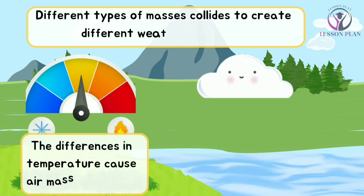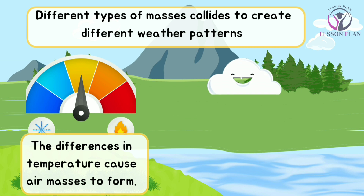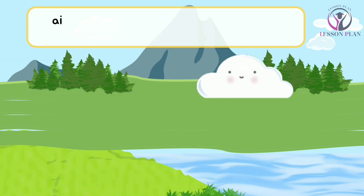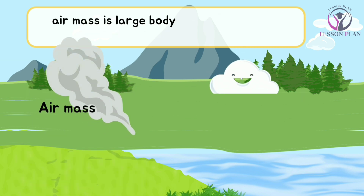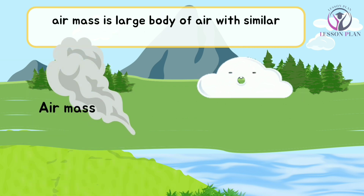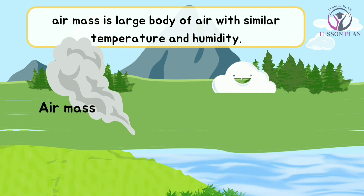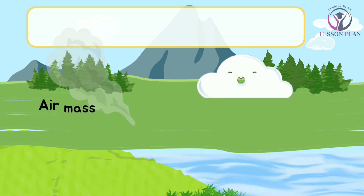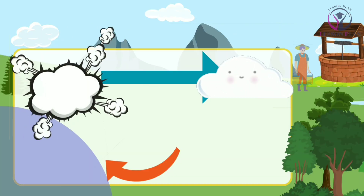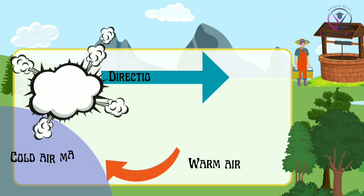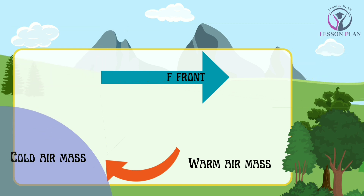The differences in temperature cause air masses to form. An air mass is a large body of air with similar temperature and humidity. When two different air masses collide, they can create different types of weather.